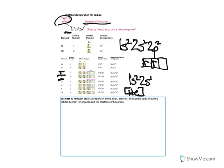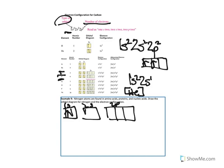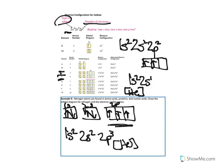Let's do a comprehensive example — the orbital diagram and electron configuration for nitrogen. Nitrogen has 7 electrons. Its orbital diagram has some in the 1s, some in the 2s, and some in the 2p. Filling in all 7, remembering that they don't share unless they must, we get the configuration 1s², 2s², 2p³. The condensed form uses helium in square brackets — the noble gas before nitrogen is helium — so it would be [He] 2s², 2p³.